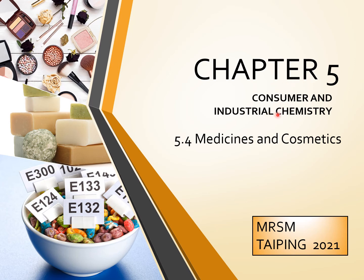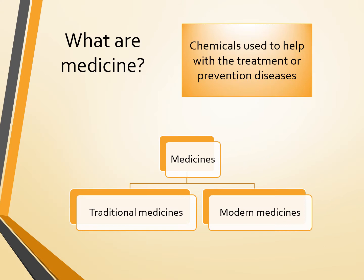Chapter 5: Consumer and Industrial Chemistry. We go to Section 5.4, Medicines and Cosmetics. What are medicines? Chemicals that are used to help with the treatment or prevention of disease. We have two classes of medicines: the first one is traditional medicines and the second one is modern medicines.